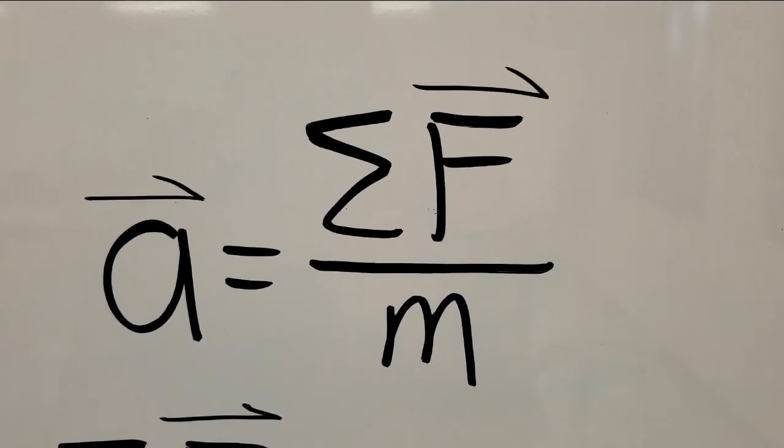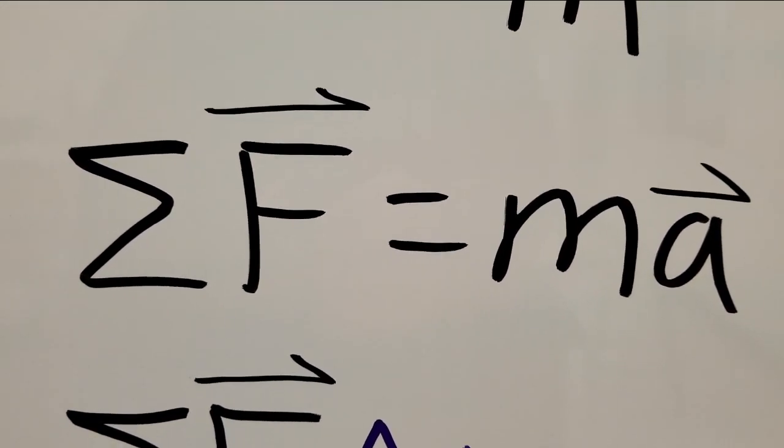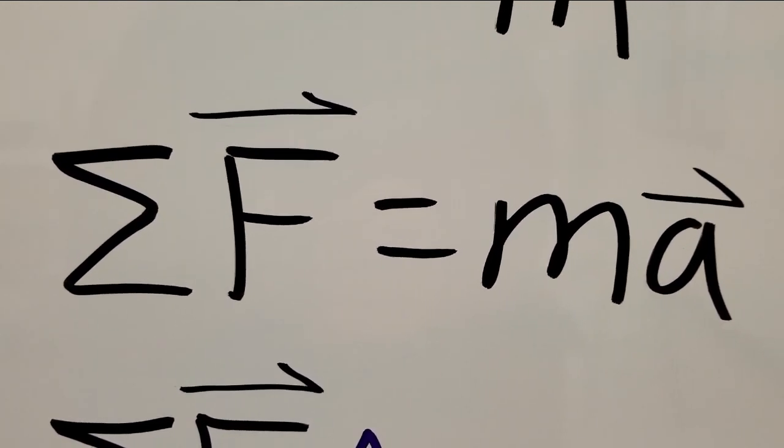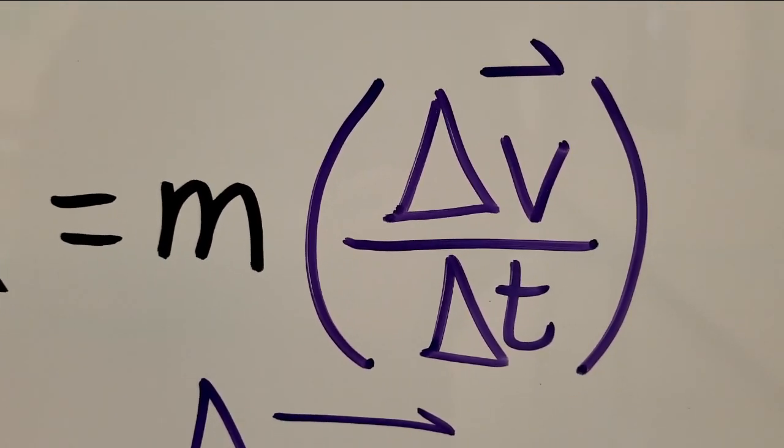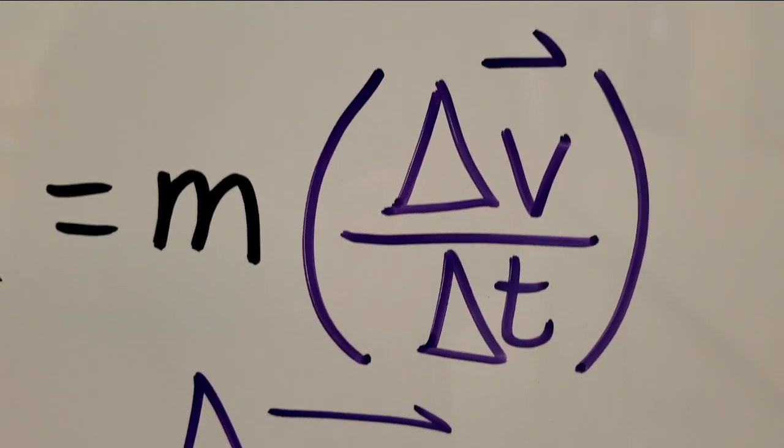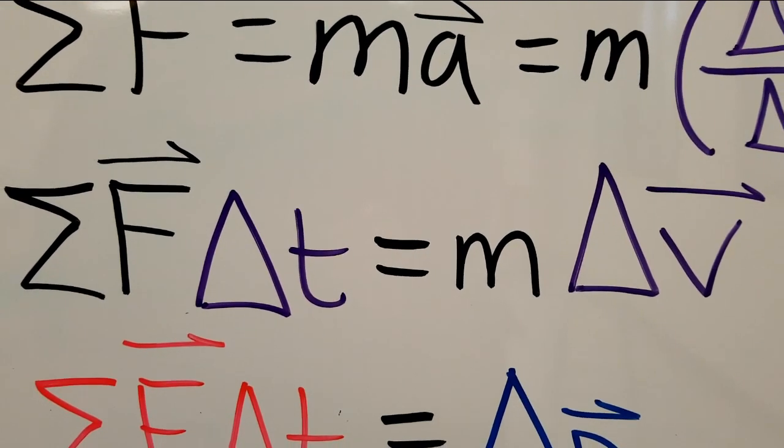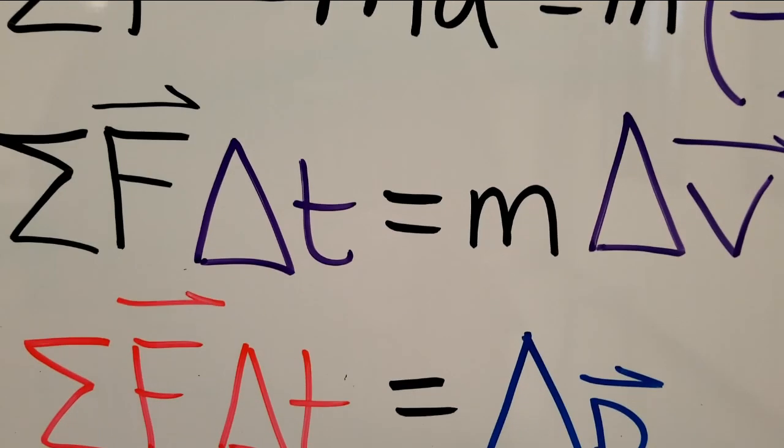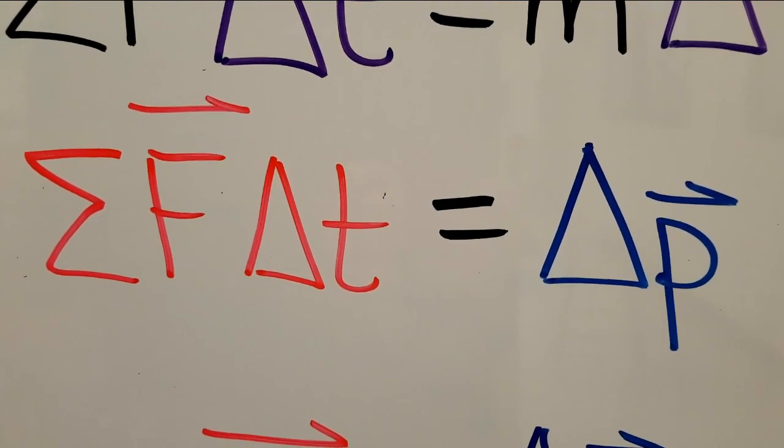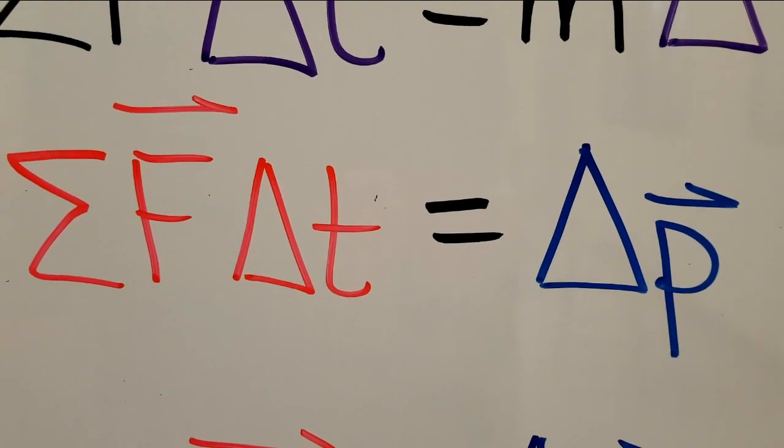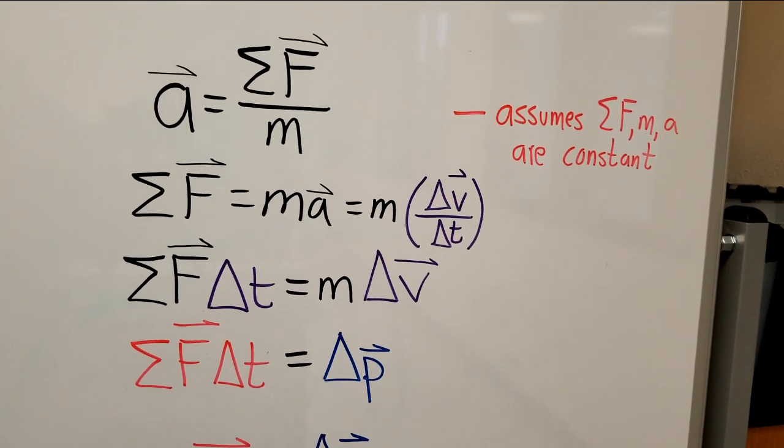Doing a little bit of algebra starting from acceleration equals net force over mass, I can rearrange it to get net force equals MA, which is how often times we write Newton's second law. If I remember that acceleration is change in velocity over change in time, I can rewrite it like this: M delta V over delta t. If I multiply both sides by delta t then I get this expression: net force delta t equals M delta V. And of course M delta V is just delta P. What's on the left looks like our impulse equation F delta t, and what's on the right is delta P. If we start from our current understanding of Newton's second law we can get to the impulse momentum theorem algebraically.